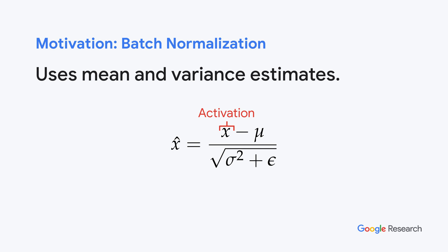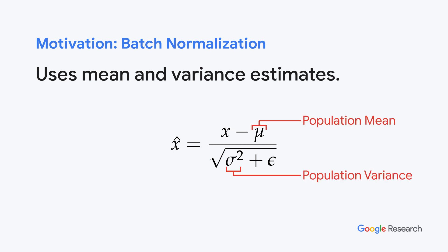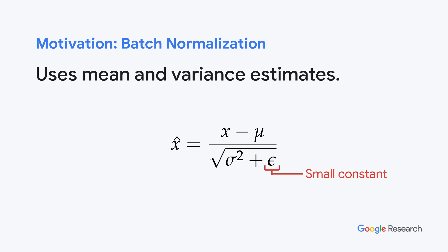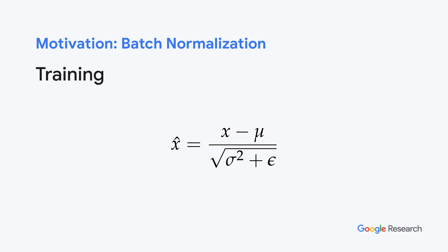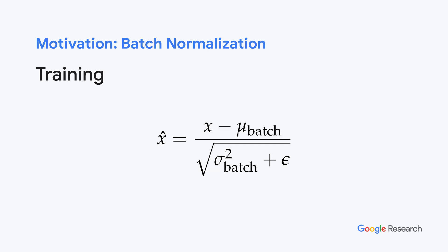A given activation x of some arbitrary layer is normalized using population mean and variance estimates to produce the normalized activation x-hat. Here, epsilon is a small constant to prevent divide by zero. However, during training, we don't have access to population means and variances since the activations are continuously evolving. Therefore, estimates computed from many batches are used instead. During testing, an exponential moving average of the mini-batch statistics is used as an approximation of the population statistics.